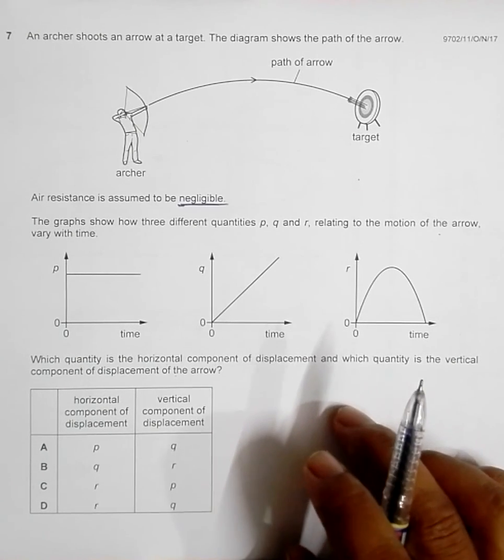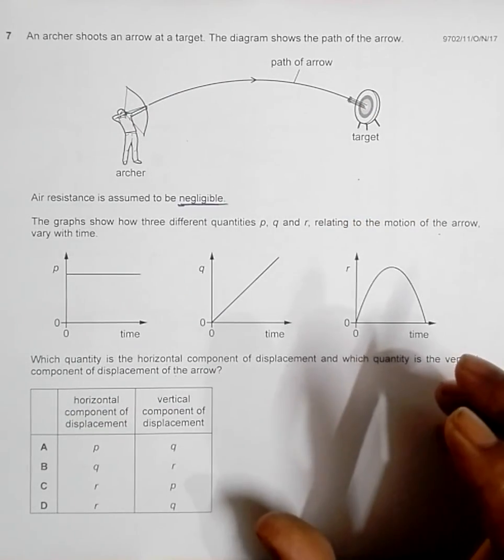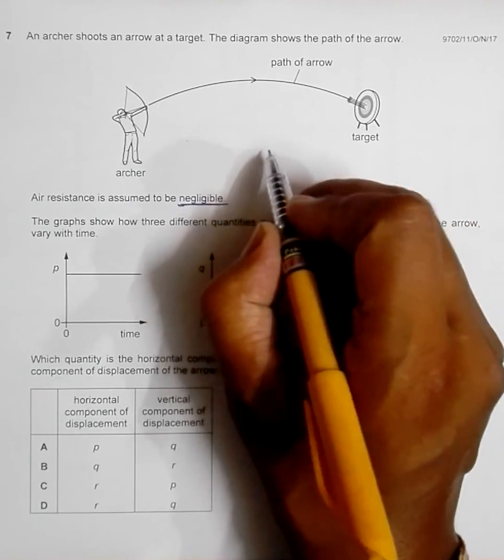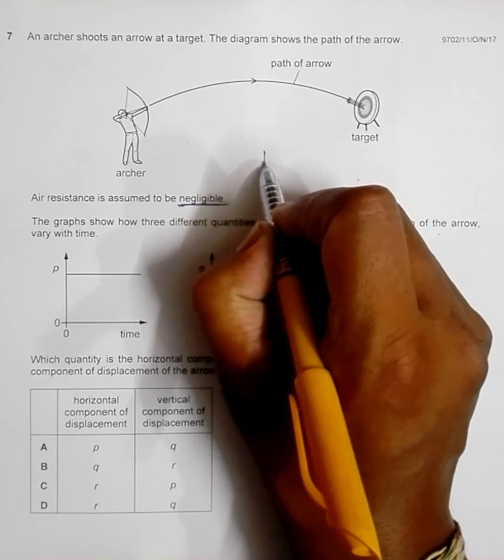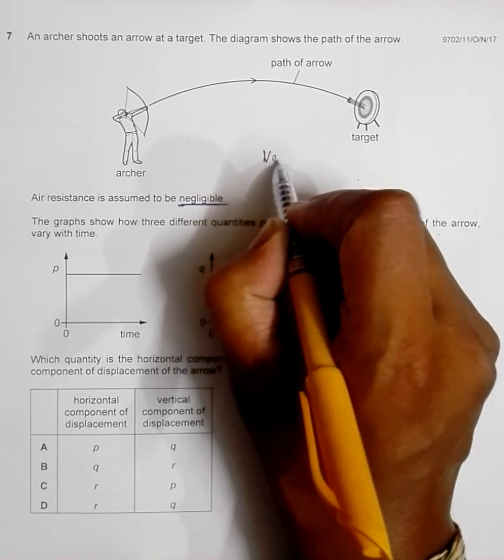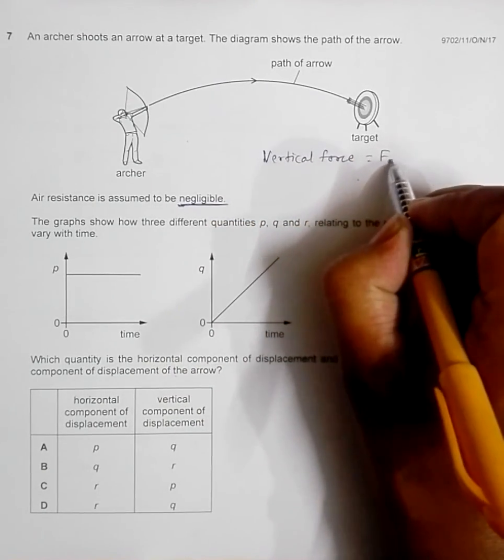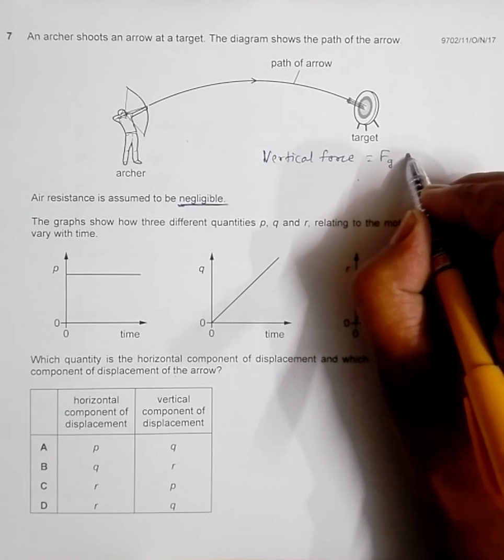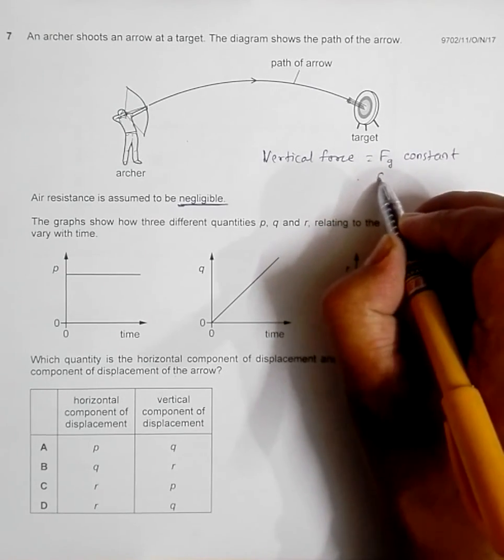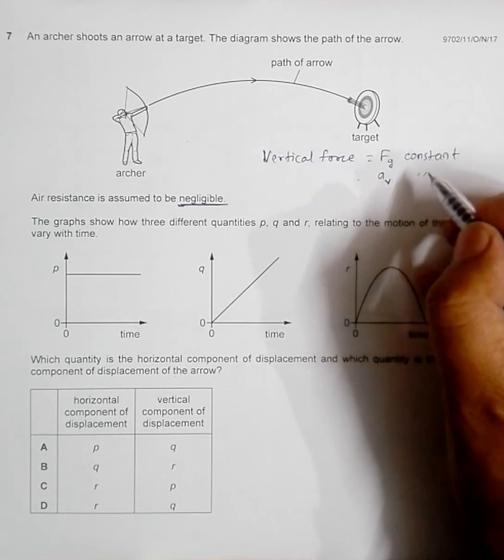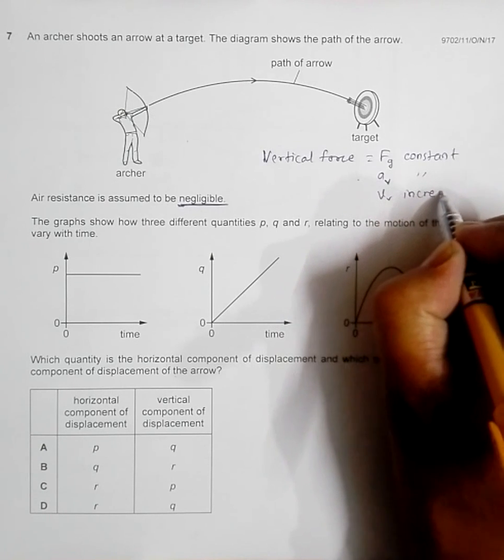For this type of projectile, let's first consider the basic rules. In these projectiles, the only force is the vertical force, which equals the force of gravity. This force of gravity is constant, so this makes the vertical acceleration constant, and that makes the vertical velocity increase uniformly.